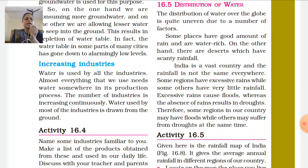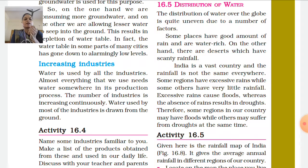India is a vast country and the rainfall is not the same everywhere. Some regions have excessive rains while others have very little rainfall. Excessive rains cause floods, while the absence of rain results in droughts. Therefore, some regions in our country may have floods while others may suffer from droughts at the same time.